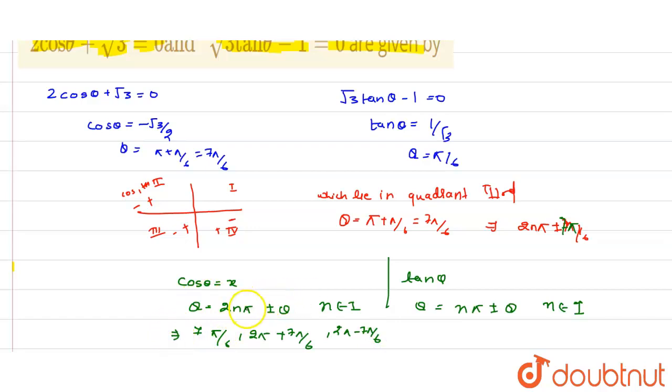When put n equals 1, this is 2 pi plus 7 pi by 6 and this is 2 pi minus 7 pi by 6. Now for tan theta, when n equals 1 this is pi plus pi by 6 and pi minus pi by 6.